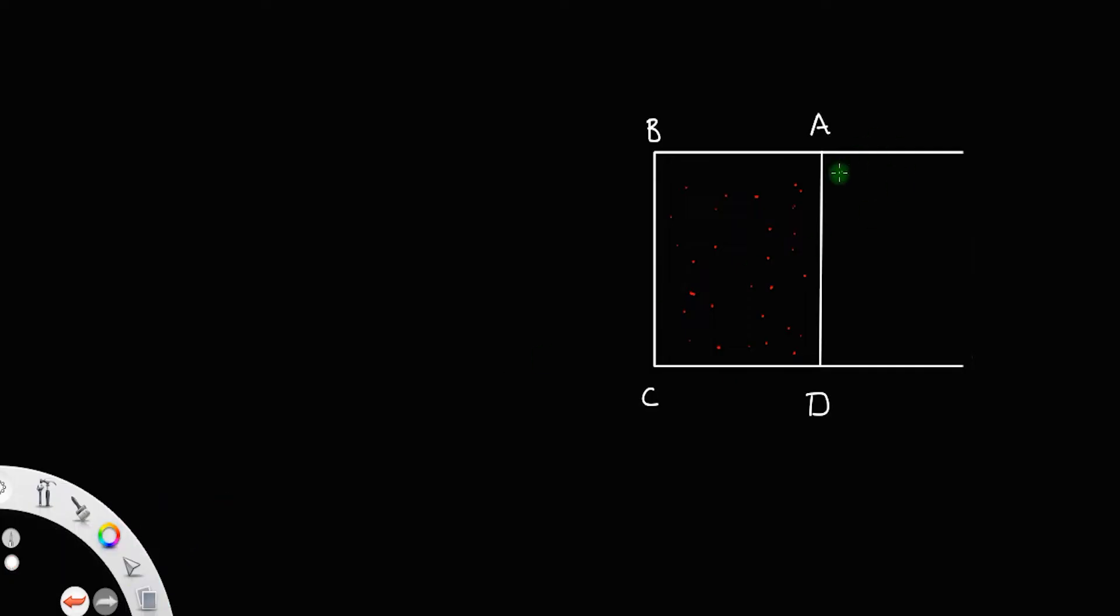Let this frame AD be moved towards a new position A dash D dash. Let us assume the length of AD is L, this distance CD is x, and this displacement DD dash is x.